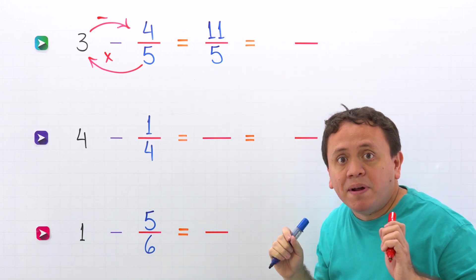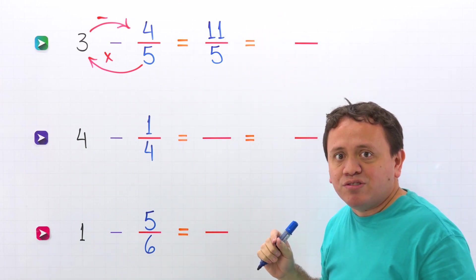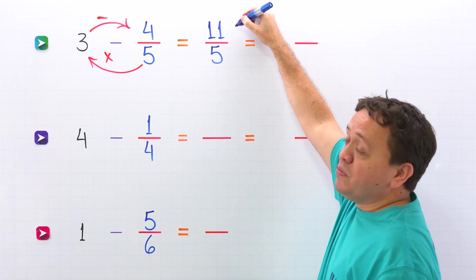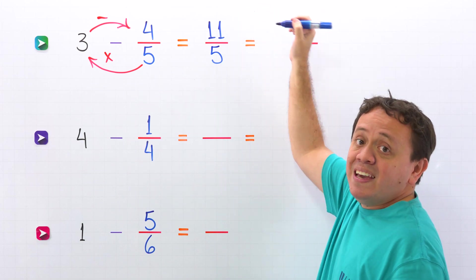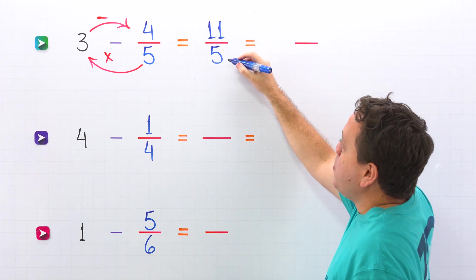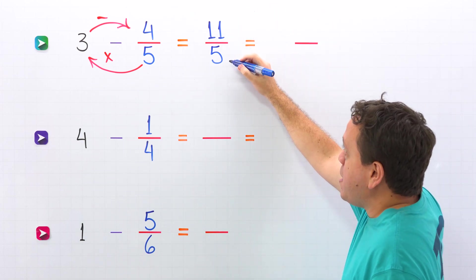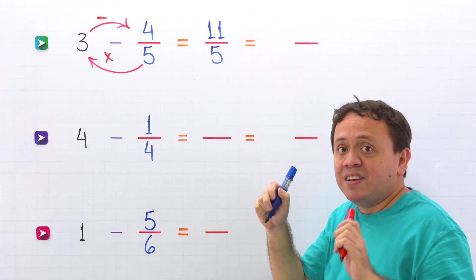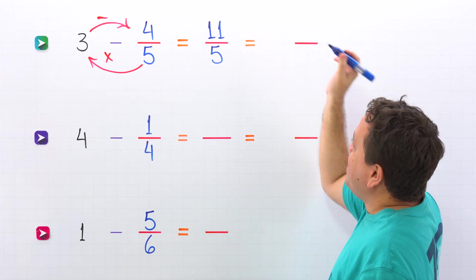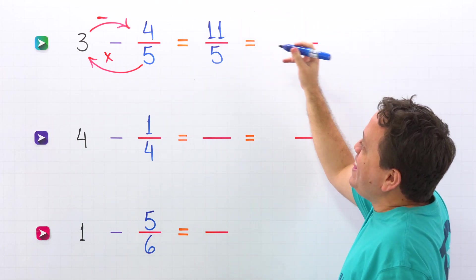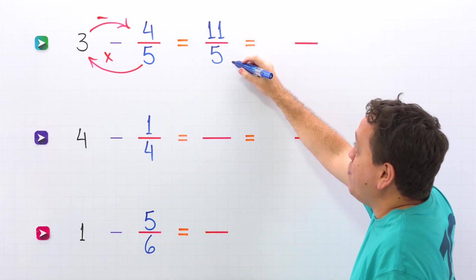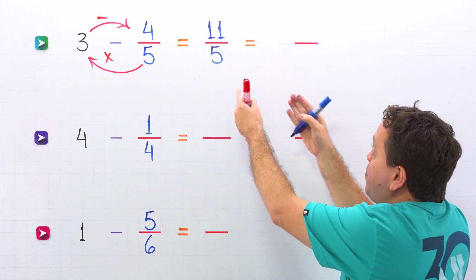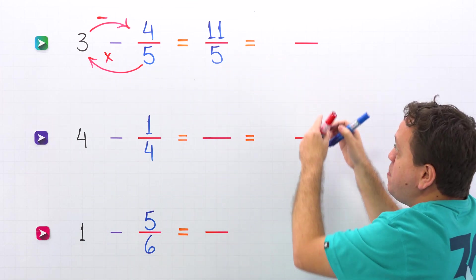At this point, we should remember improper fractions. An improper fraction is a fraction where the numerator — the top number — is greater than or equal to the denominator, the bottom number. 11 fifths is an improper fraction, given that the numerator 11 is greater than the denominator 5. And also, we can convert improper fractions to mixed numbers.